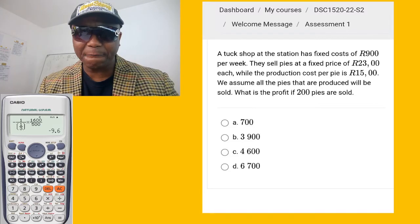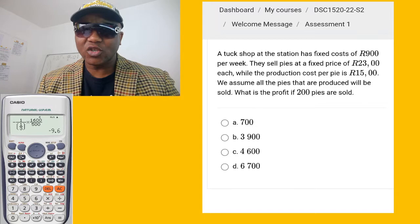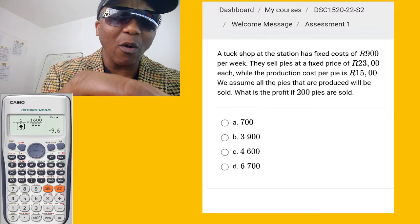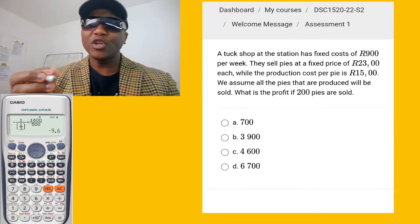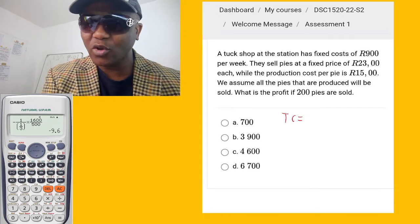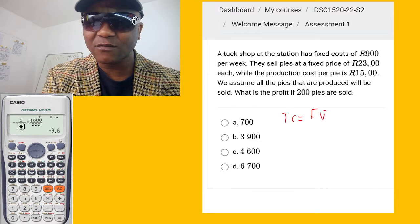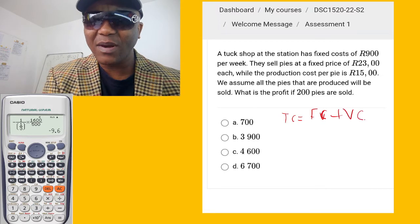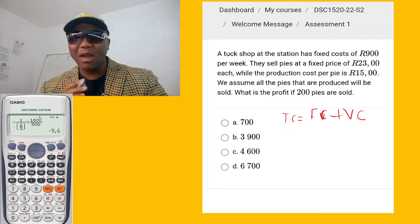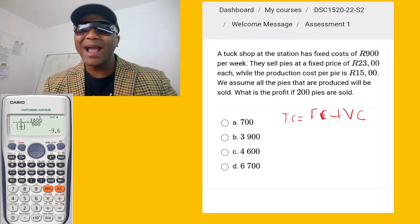Now let's get to the business. First and foremost, I want to break down for you something very crucial. All you need to know is Total Cost equals Fixed Cost plus Variable Cost. You have to memorize that, you have to know that.